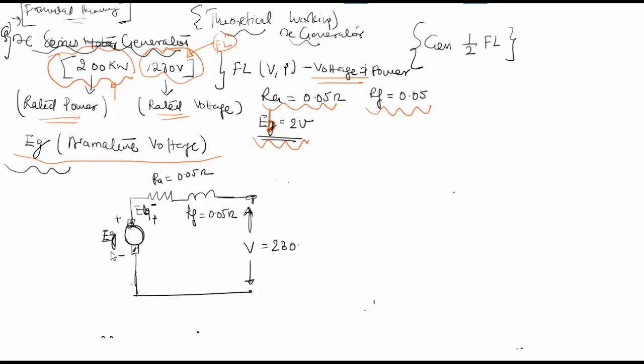The equation will be: EG voltage generated equals V plus IA into (RA plus RF) plus EB, which is the voltage drop for the brush. Here IA equals IL, which is the load current, since this is a series generator.